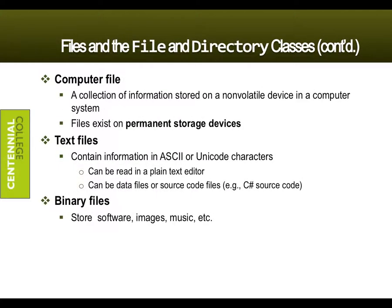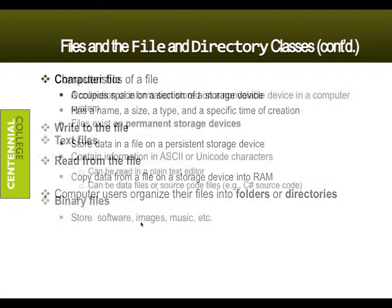What we want to do is store text files or binary files. A text file obviously has text stored in ASCII format or Unicode characters, and we can read it in a plain text editor like Sublime or Notepad++. Binary files store things like music, software, and images. You can read those things too with C#. Reading and writing files are super important.